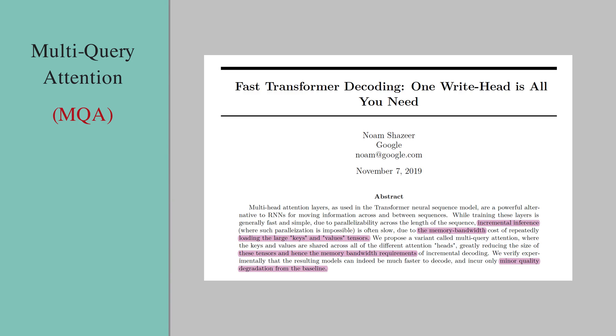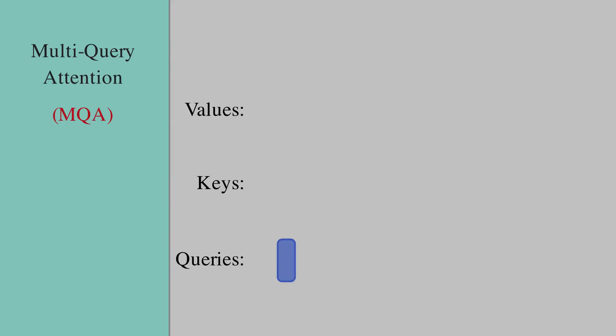Let's see how MQA works. In multi-query attention we still have h query heads as shown here, but we use a single key and a single value head.